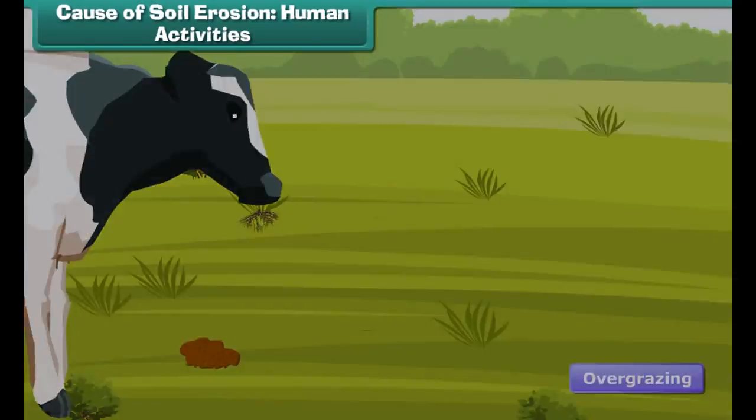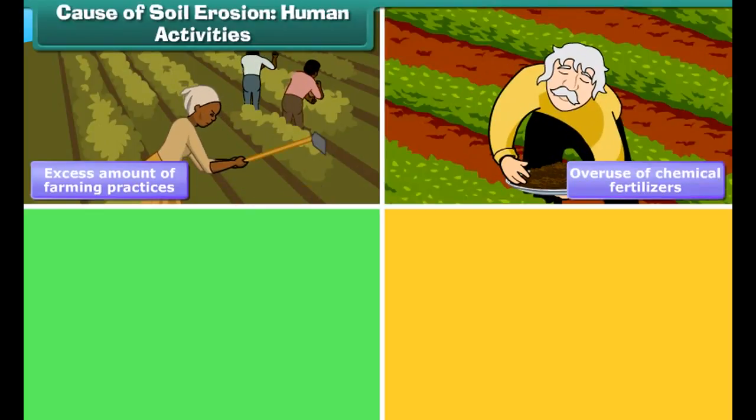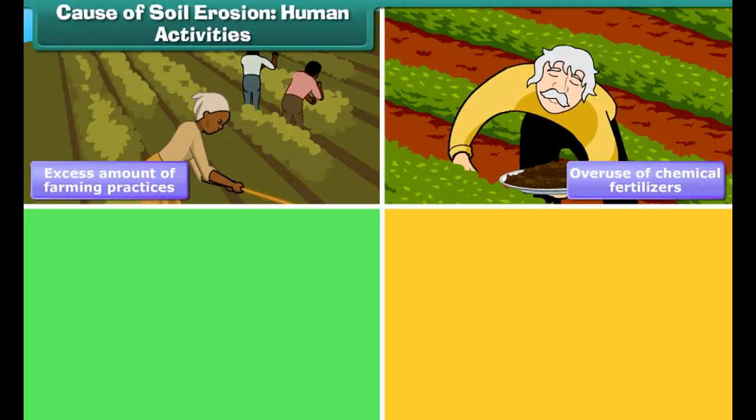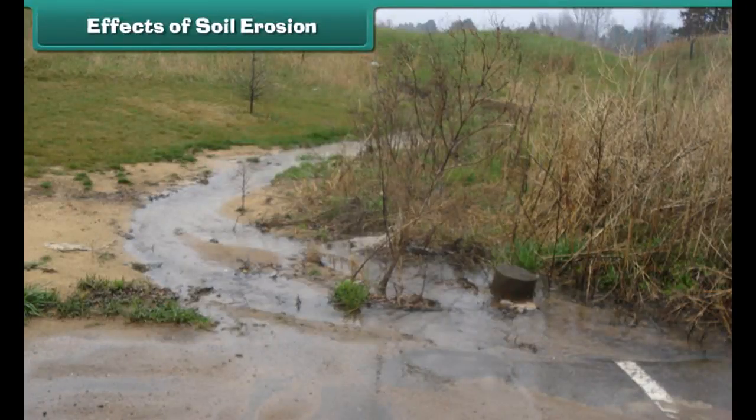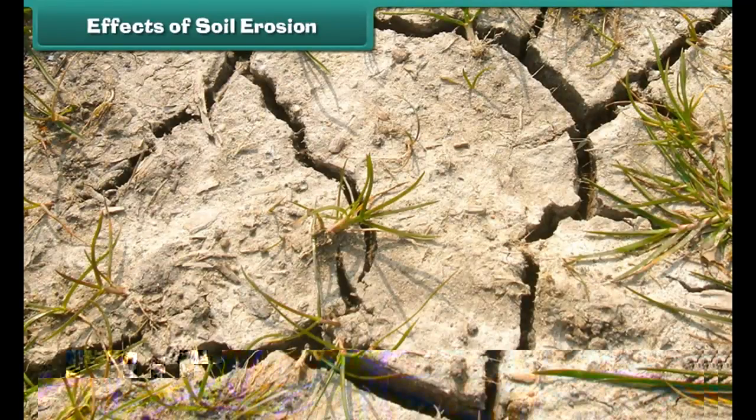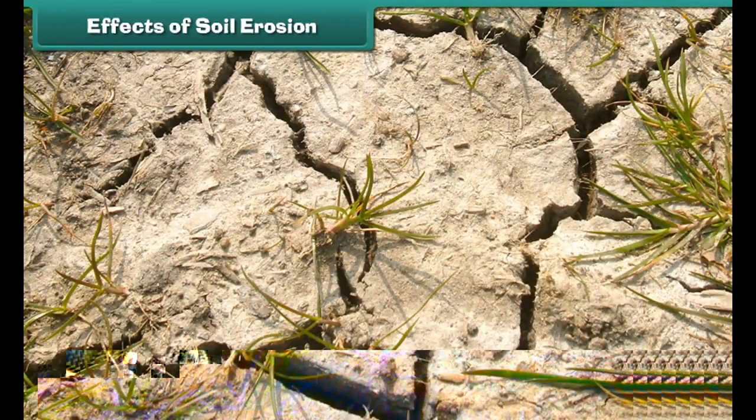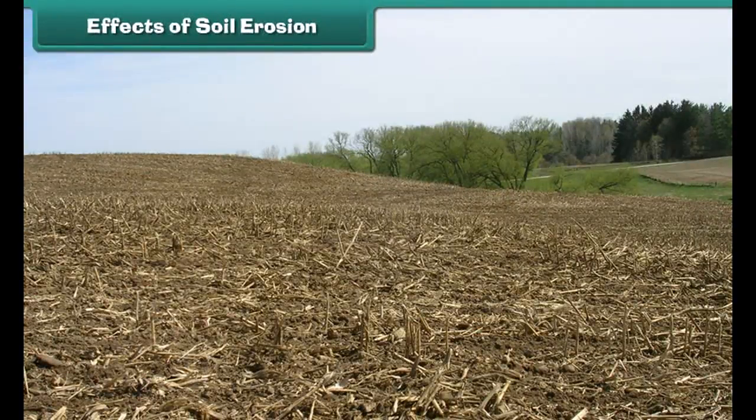Though soil erosion is in itself a naturally occurring process, it is in many cases increased by human activities. Some of these include deforestation, overgrazing by animals, improper or excess farming practices, trail building, overuse of chemical fertilizers, housing construction, mining, etc. Soil erosion leads to many unfavorable conditions.